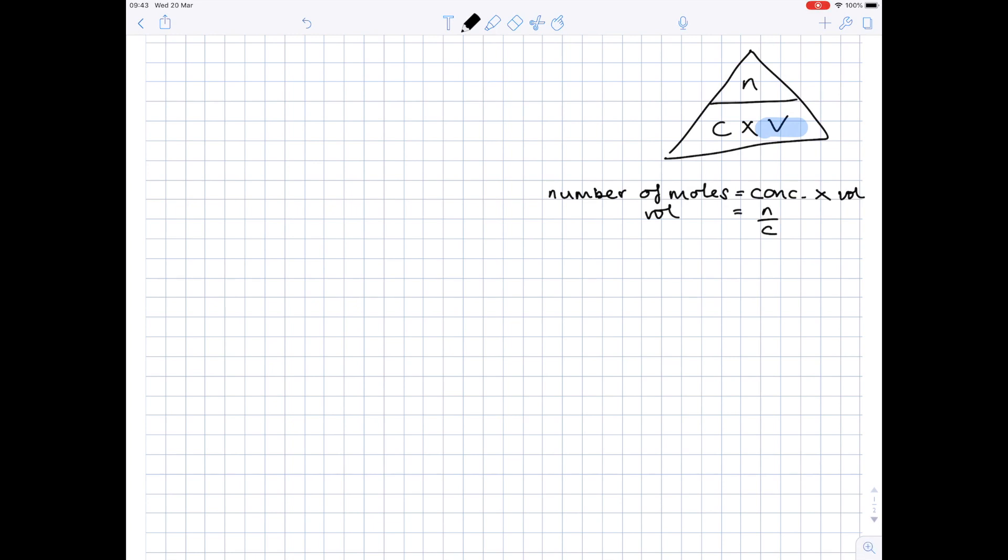One more thing to notice is that with these calculations you need to be careful with units, and you tend to need to have all your volume units here in decimetres cubed rather than centimetres cubed. The way you do that is if you have 250 centimetres cubed, for example, you want it in decimetres cubed where you divide your answer by 1000. So 250 centimetres cubed is the same as 0.25 decimetres cubed, and that is extremely important.